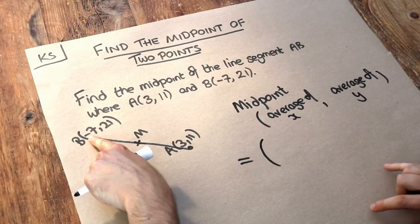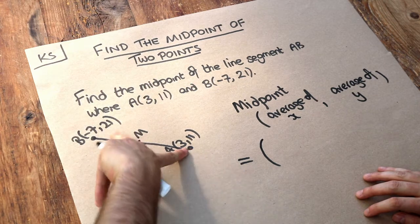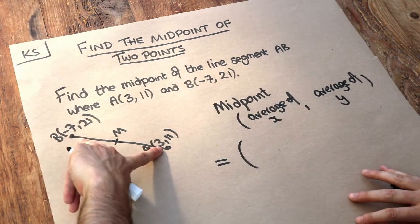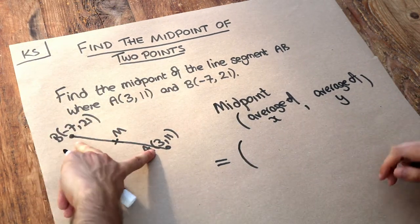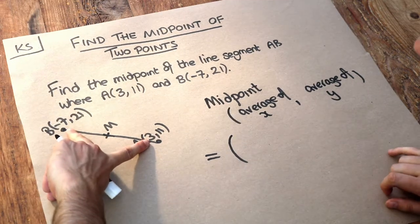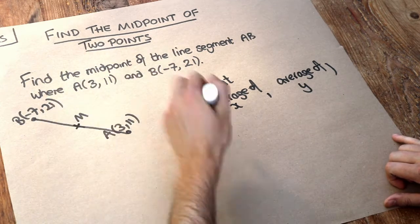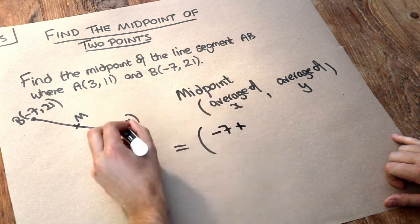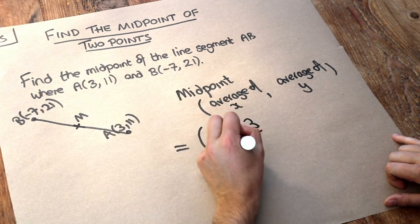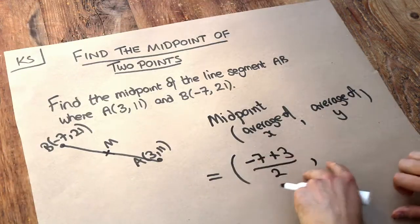So what is the average of -7 and 3 if we're finding the average of the x values? Well to find the average we could use the median or the mean for this. You could just add them together and divide by 2 to find the mean. So -7 plus 3 divided by 2, and then the average of the y values.